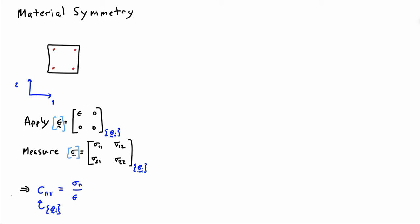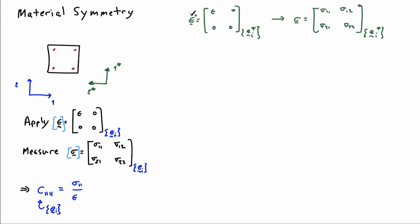Now let me consider doing the exact same experiment but with respect to a second coordinate system — I'll call it 1 star, 2 star. I'll apply a strain in the one direction in the 1 star, 2 star basis, and that will allow me to measure the stress components in the 1 star, 2 star basis. I can compute C1,1,1,1 now in the 1 star, 2 star basis — this component is in the star basis.